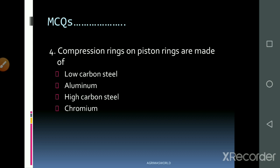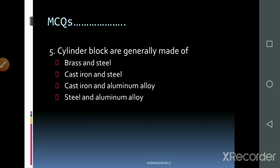Review question: Compression rings are made of which material — low carbon steel, aluminum, high carbon steel, or chromium? The answer is chromium. The cylinder blocks are generally made up of cast iron and aluminum alloy, as already discussed — cast iron and aluminum.